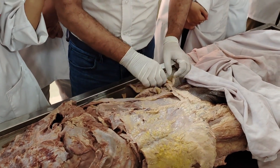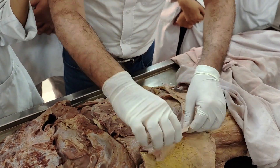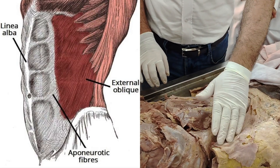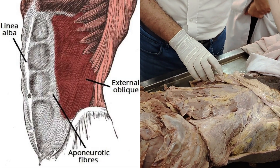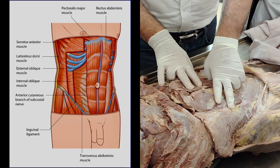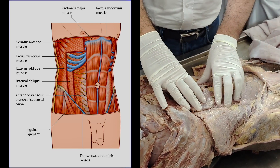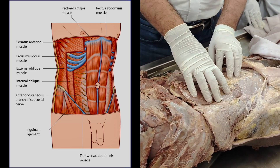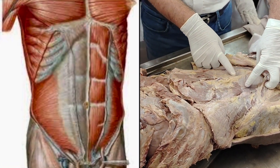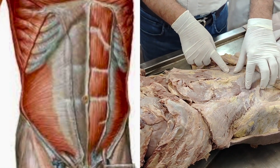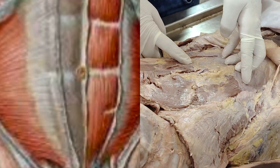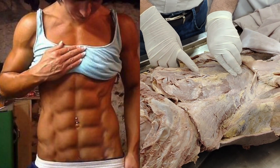In the anterior abdominal wall you have the rectus abdominis, which has fibrous intersections. That's why when it builds up it looks like packs. There are three packs above and three below, making six packs. Sometimes below the umbilicus there may be an incomplete transverse intermuscular intersection leading to formation of eight packs.